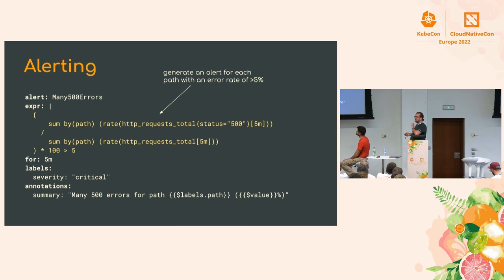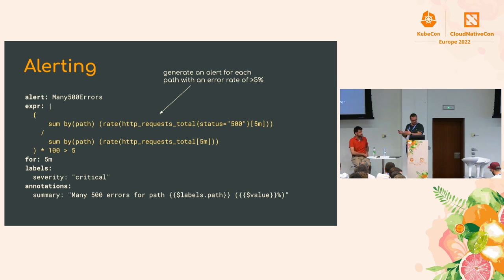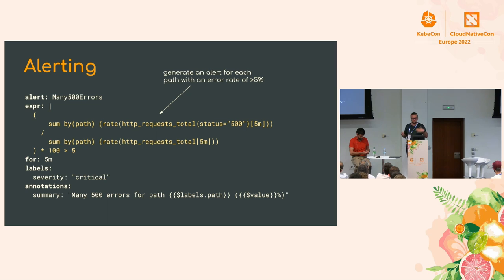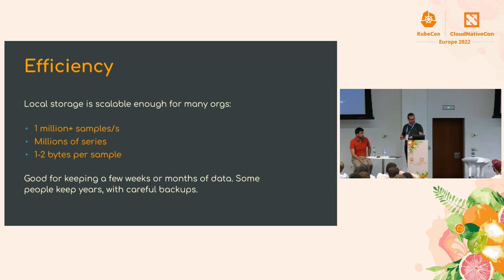For alerting, the very short story is: you write an expression that only returns data when there is a problem. Alerts have labels and annotations. Labels help Alert Manager sort out the routing; annotations help humans sort out the resolution.